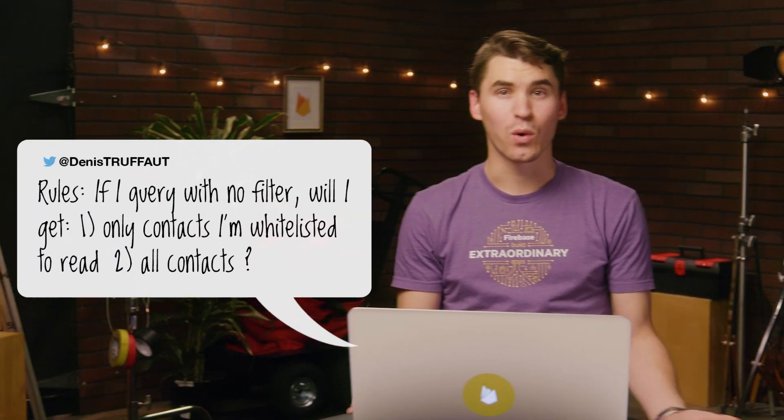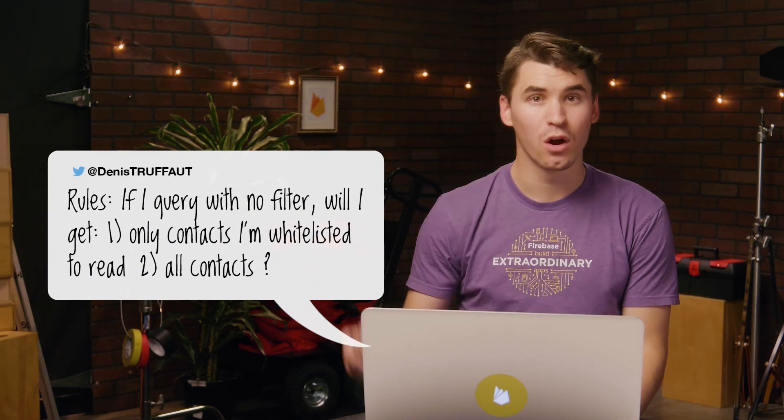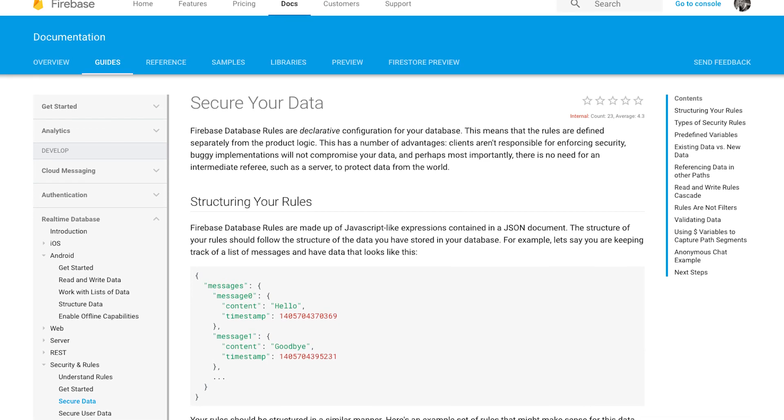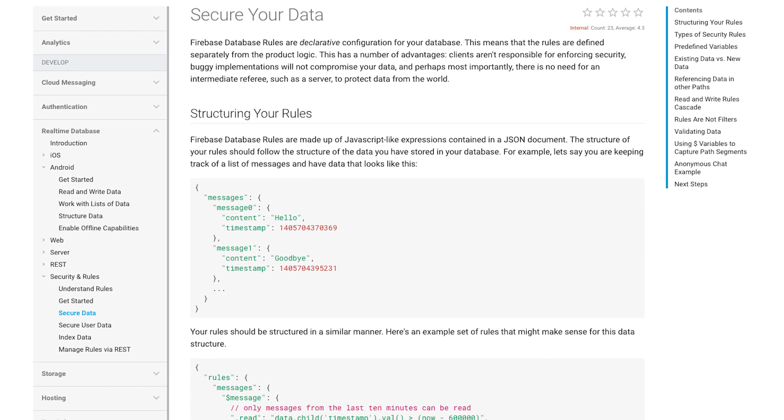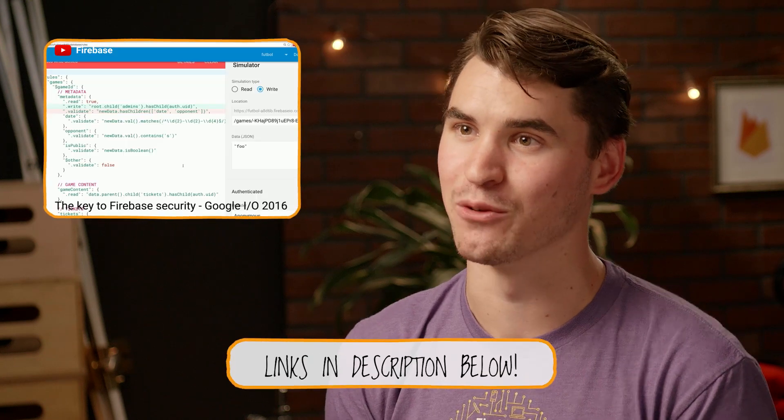Moving right along, Dennis on Twitter is wondering, if I query with no filter, will I get one, only contacts I'm whitelisted to read, or two, all contacts? Well, Dennis, this depends on your security rules. The Realtime Database is a JSON database, and when you query for your data at a certain location, you get all of the data at and below that location. So you would get all of your contacts. It's important to know rules are not filters. A read will either return all of the results if the read is allowed, or none of them if it's rejected. That's true whether you query with a filter or without a filter. I'd recommend watching The Key to Firebase Security, one of our popular I/O videos, for more on writing great security rules. Thanks, Dennis.